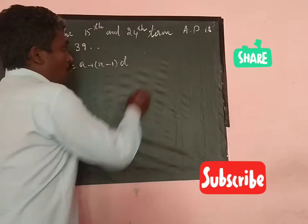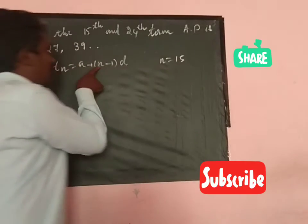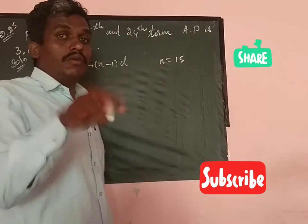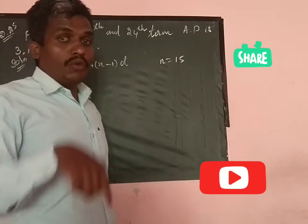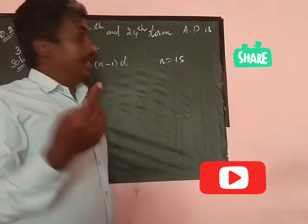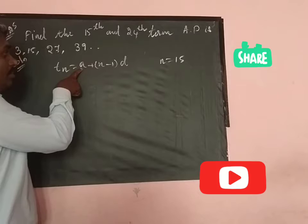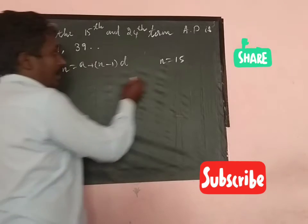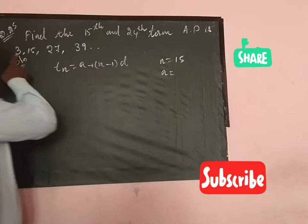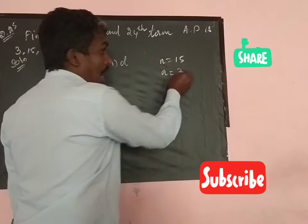We want to find the 15th term, so n is equal to 15. The first term a is equal to 3.